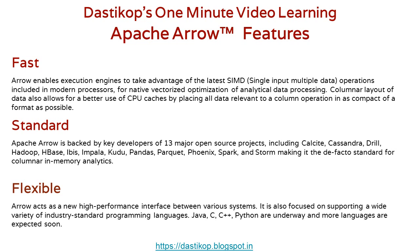Arrow is also flexible — it acts as a new high-performance interface between various systems. It is focused on supporting a wide variety of industry-standard programming languages such as Java, C, C++, and Python, with more languages expected soon.